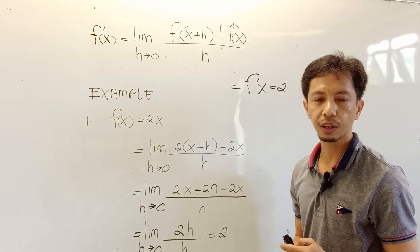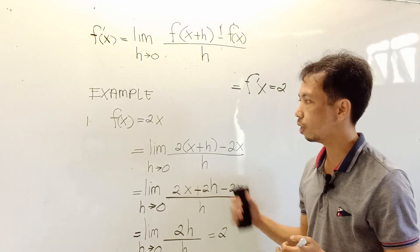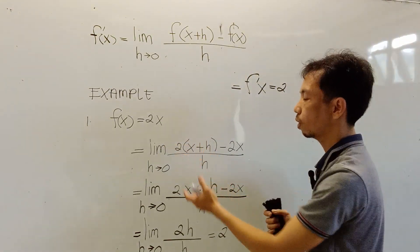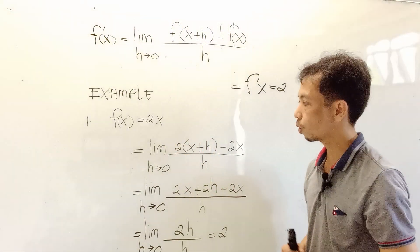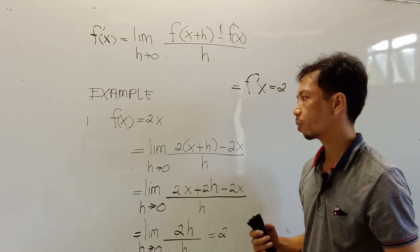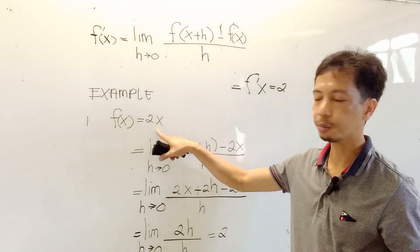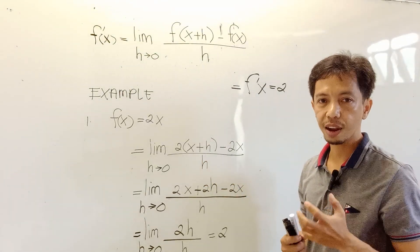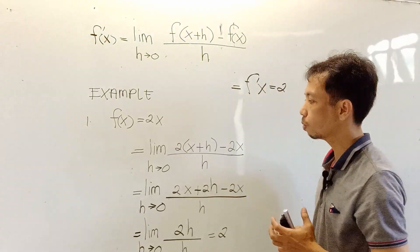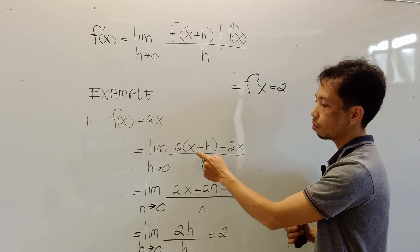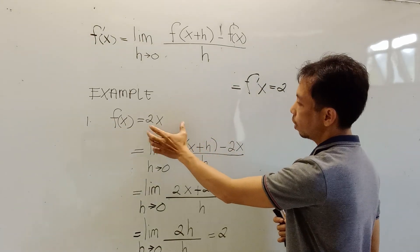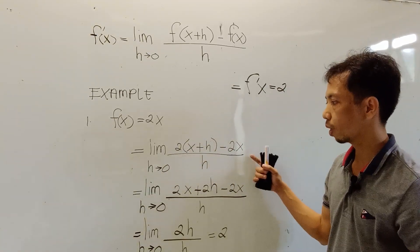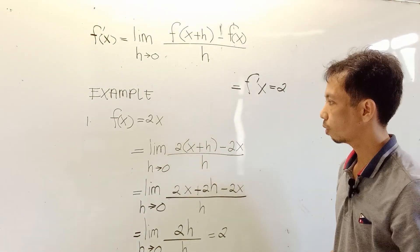So for instance, there are more than one x variable in the function. For example, 2x squared plus x, so there are more than one. So each x variable, you are going to replace it with x plus h. Again, each x variable, you are going to replace it with x plus h. So it means the more x variables, the longer your solution will be.